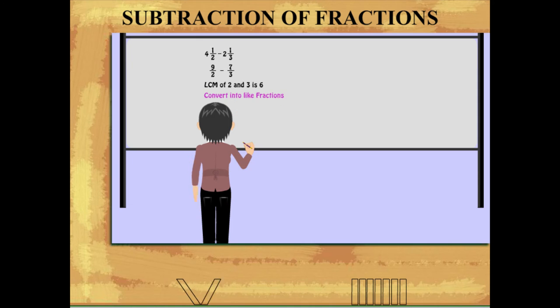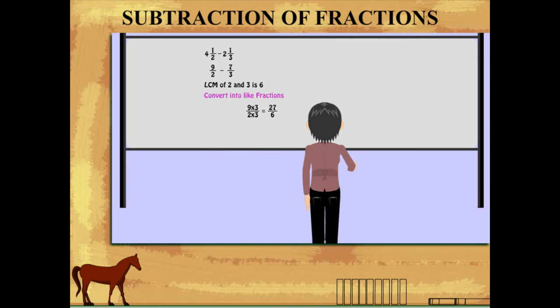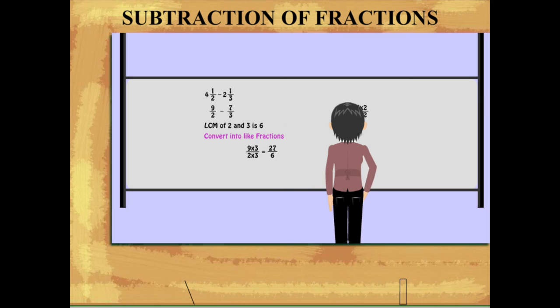So, 9 upon 2 into 3 upon 3 equals 27 upon 6. 7 upon 3 into 2 upon 2 becomes 14 upon 6.